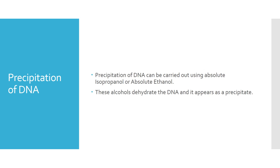Finally, DNA can be precipitated using isopropyl alcohol or absolute ethanol. Isopropanol is used in the ratio of 1 to 1, and absolute ethanol can be utilized in the ratio of 1 to 1 as well. Alcohols dehydrate the DNA and render it as a precipitate, which is visible in the test tube.